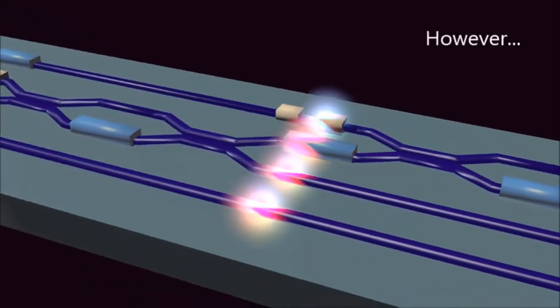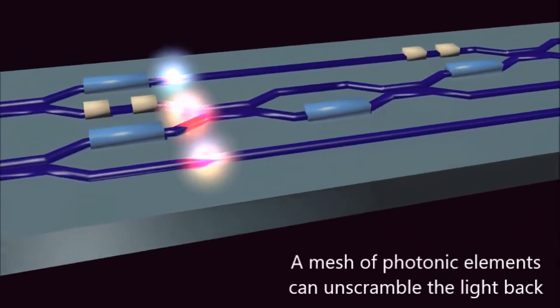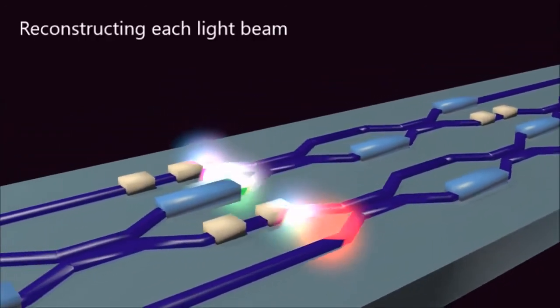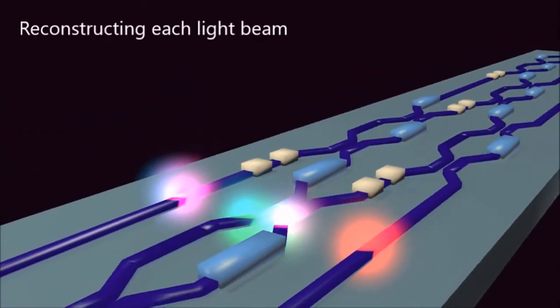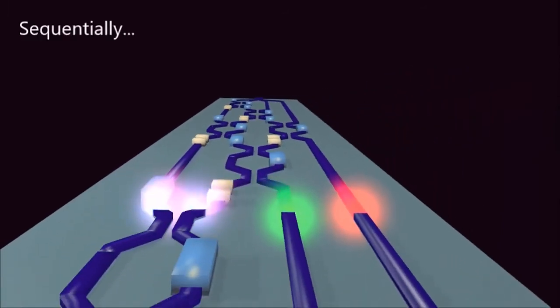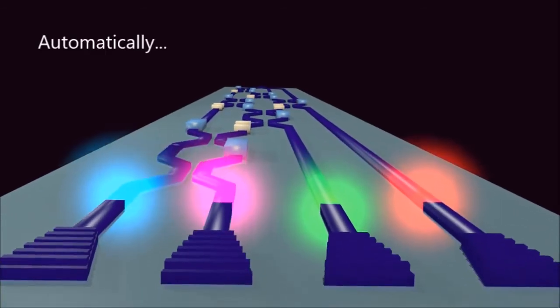However, with this mesh of photonic components here, we can unscramble the light again. We can reconstruct each beam, one after the other, separating them again, automatically, and using only optics to do the work.